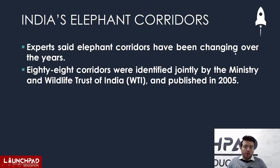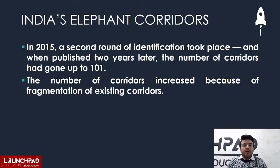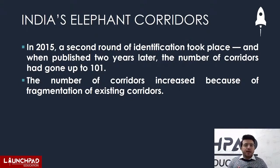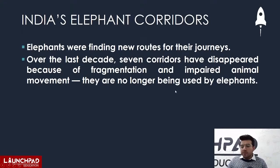Elephant corridors have been changing over the years — obviously, because human beings interfere with everything. Because of fragmentation of existing corridors and impaired animal movement, many corridors are no longer being used by elephants.